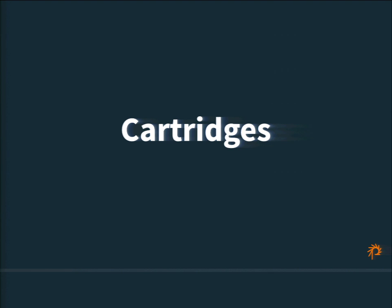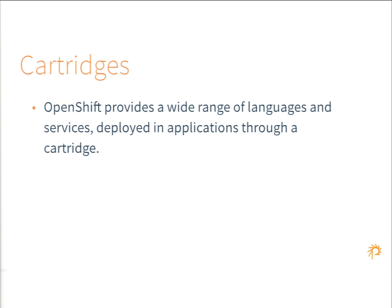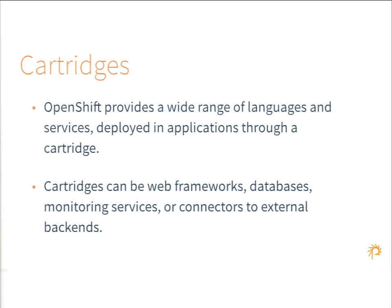Diane talked about cartridges. OpenShift provides a wide range of cartridges for different languages and services. A cartridge can be many different things, and many applications might have more than one cartridge. For example, a Drupal site would probably have the PHP cartridge as the main thing responding to requests, the MySQL cartridge — either MySQL 5.1 or 5.5, there are also community cartridges for MariaDB — and the Cron cartridge. In all our Drupal builds, we have the Cron cartridge run Drush Cron every hour.